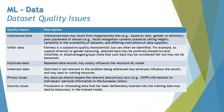Duplicate data is a common issue across all types of applications, where repeated data records may unduly influence the result of an ML model. Irrelevant data — data that is not relevant to the problem being addressed may adversely influence the result and waste resources. For example, if you want an ML model to identify dogs but the data set contains cats, that is irrelevant data.